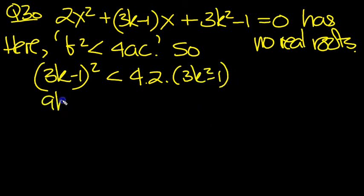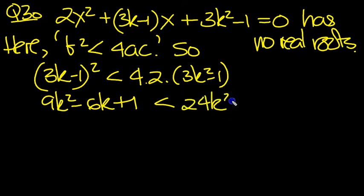Expand this bracket then. 9k² - 6k + 1, because the two middle terms add up to -6k from 2 lots of -3k, and minus times minus is plus 1, is less than 8 times the right bracket: 24k² - 8.